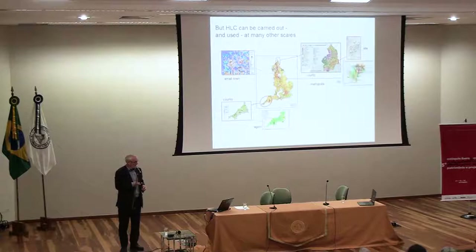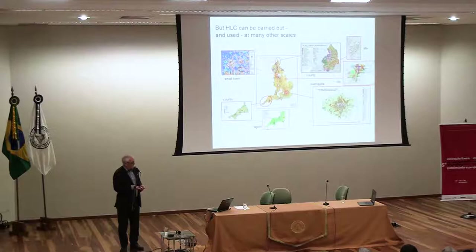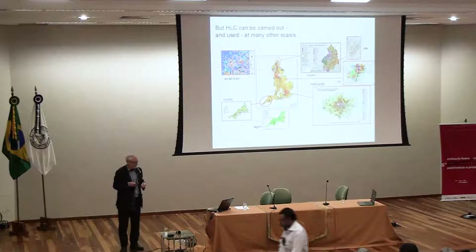Moving up the scale, HLC was used quite early on for small towns in Lancashire, where the characterisation was used to inform planning. Larger cities like Lincoln, which I'll speak about later, and even major urban conglomerations — this is Greater London. The green area didn't show countryside; it simply showed 1920s, 30s, and later housing, so the whole of that is an urban area — probably the most complicated HLC we've done.